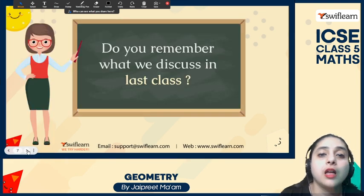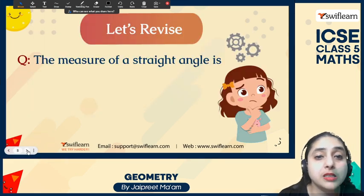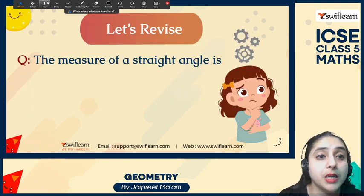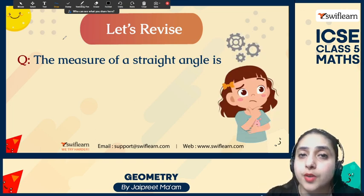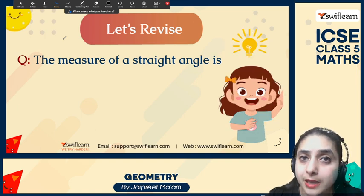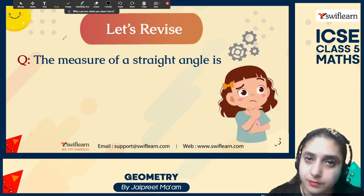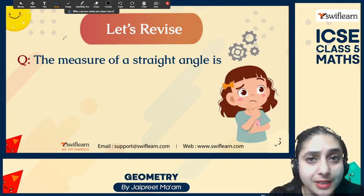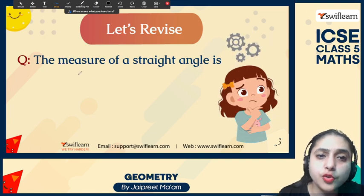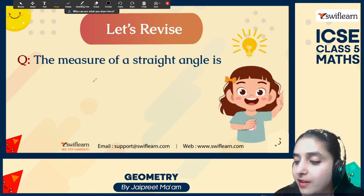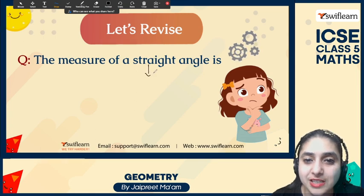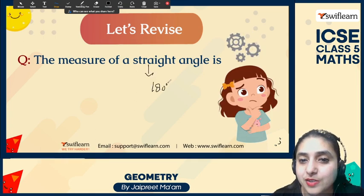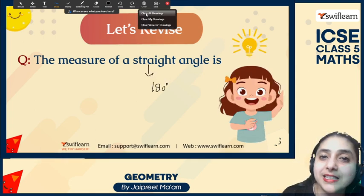Do you remember in the last class we talked about the different types of angles — the straight angle, right angle, acute angle, obtuse angle, and reflex angle? Do you remember the measure of a straight angle? Yes, you are correct — it's 180 degrees. A straight line is an example of a straight angle.